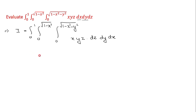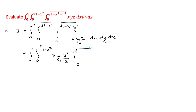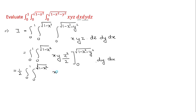Integrating with respect to z: x and y are both constants, so integration of z is z²/2. Evaluating between 0 and √(1 minus x² minus y²), and squaring the square root, gives (1 minus x² minus y²)/2. The result is (1/2) ∫(0 to 1) ∫(0 to √(1 minus x²)) xy(1 minus x² minus y²) dy dx.